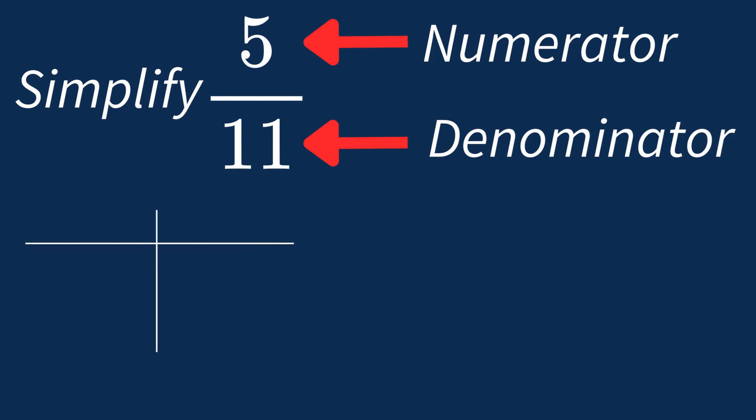First, let's list out the factors for each. For 5, the factors are 1 and 5. For 11, the factors are 1 and 11.